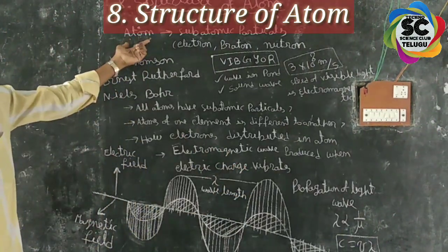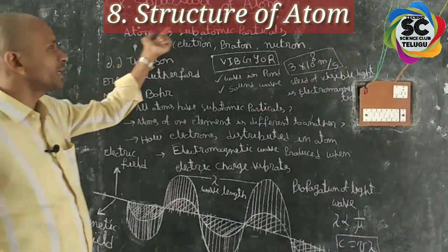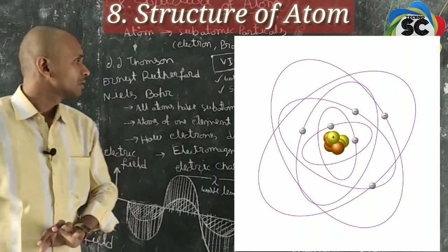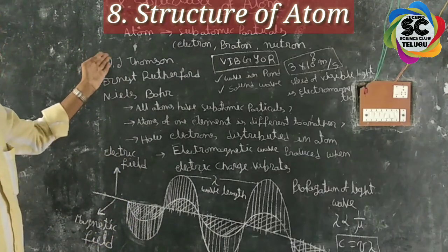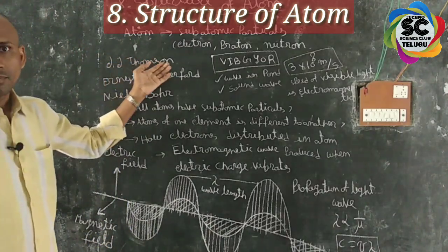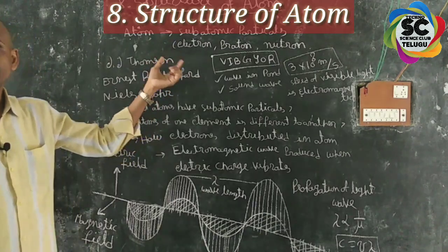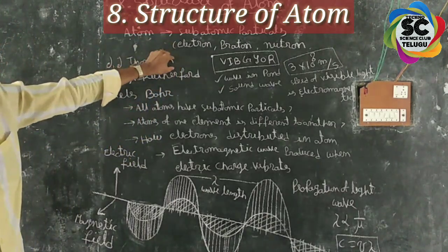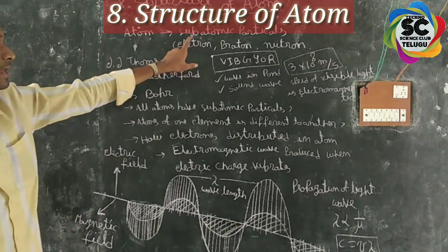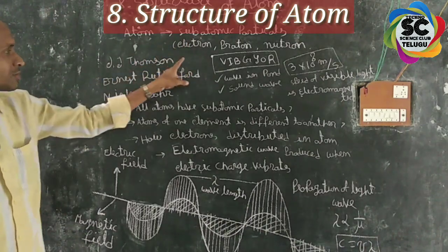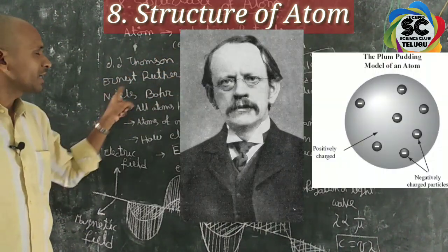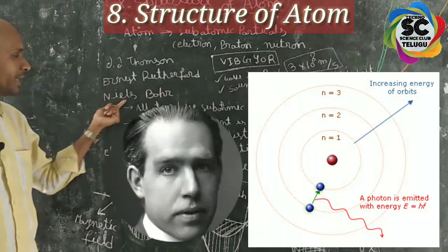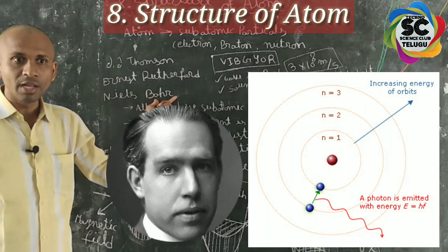Atoms consist of subatomic particles like electrons, protons, and neutrons. Different scientists explained different atomic structures in 9th class — for example, J.J. Thomson's atomic model, Ernest Rutherford's atomic model, and Niels Bohr's atomic model.